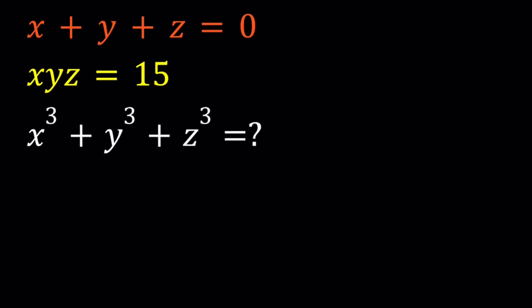We have three variables but only two equations to work with, so that's kind of weird. First of all, let's set z equal to 1, and then that's going to give us the following system: x plus y is equal to negative 1 and xy is equal to 15.